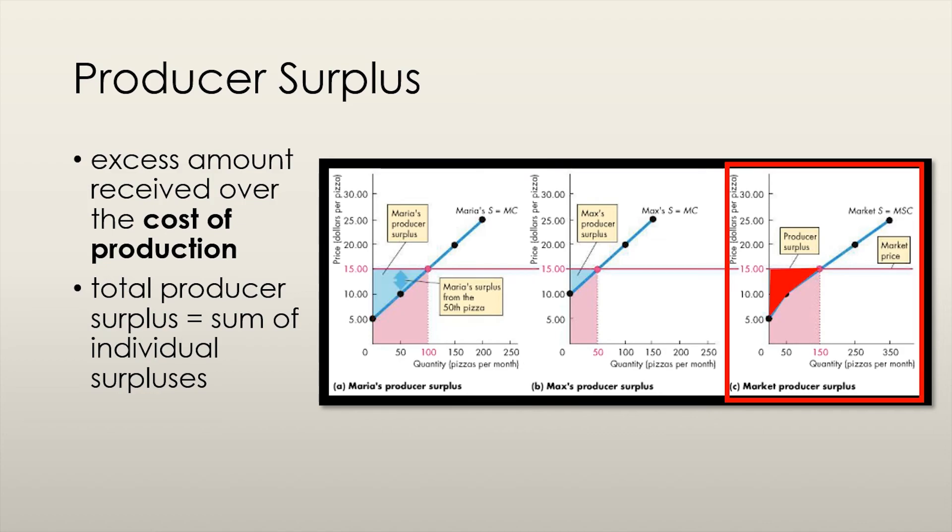If we want to calculate the total producer surplus, we can either take the sum of the individual producer surpluses, or we can calculate the area above the supply curve and below the price. Both will give us the same answer. Again, we can't use the formula for a triangle since the shape looks more like an arrow. We could split it up into two triangles and a rectangle, or any other combination of shapes that would allow us to use simple geometric calculations.